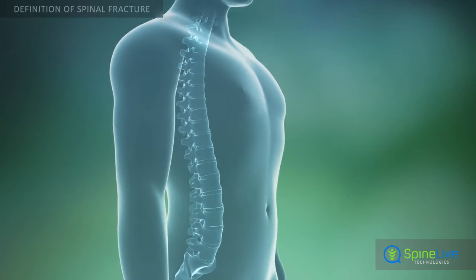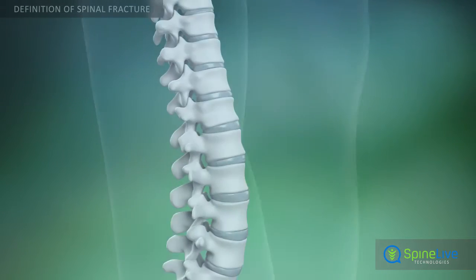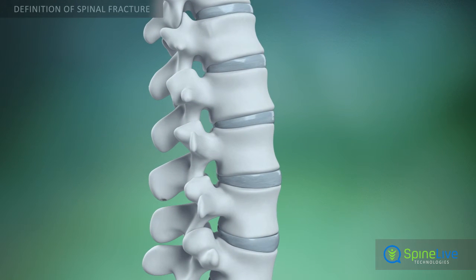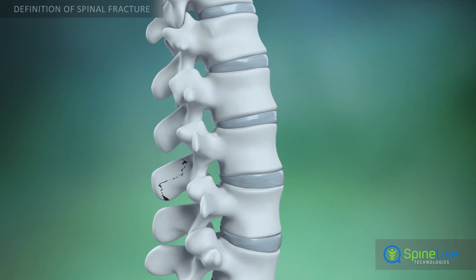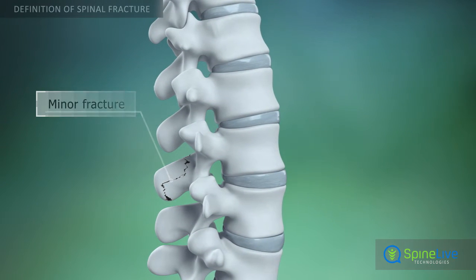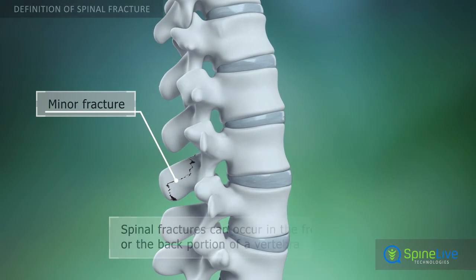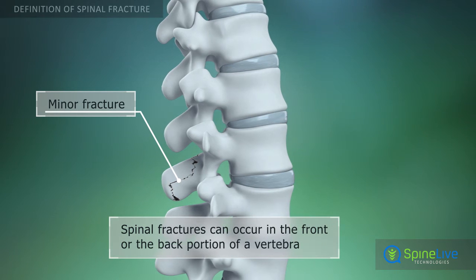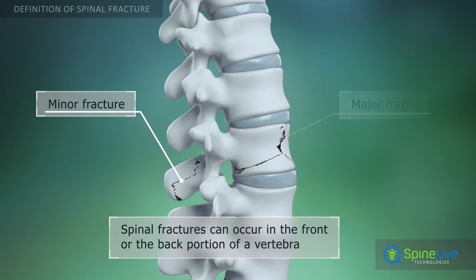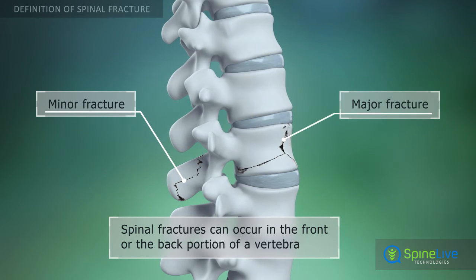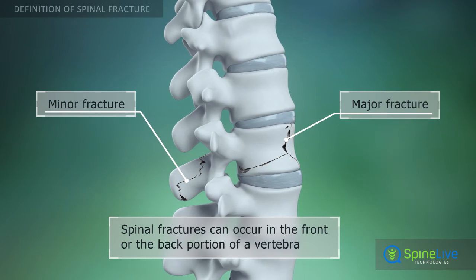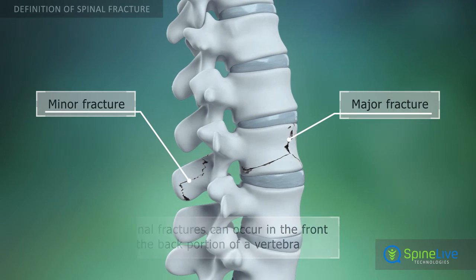There are several types of spinal fractures. Minor fractures occur when the posterior portion of the vertebrae has broken or cracked. Major spinal fractures occur in the anterior part of the vertebrae.